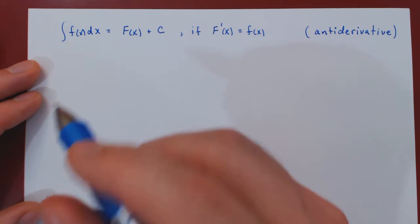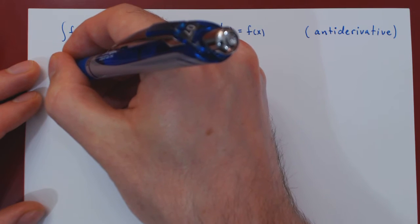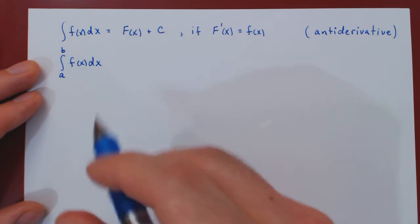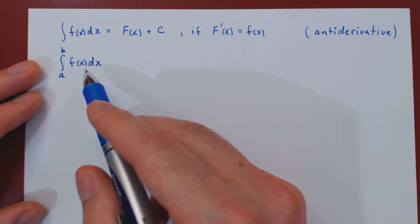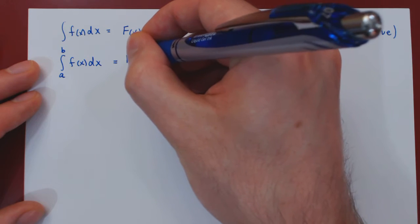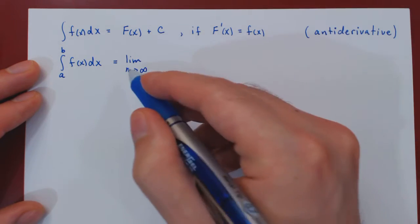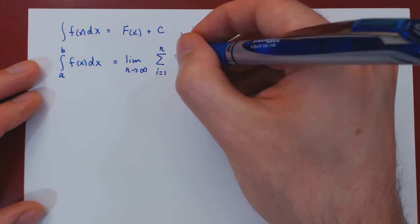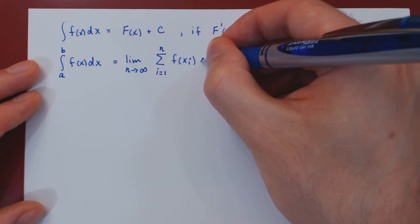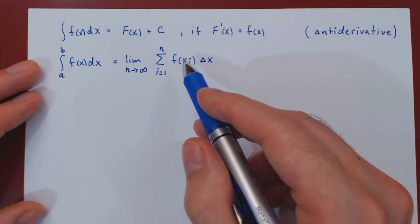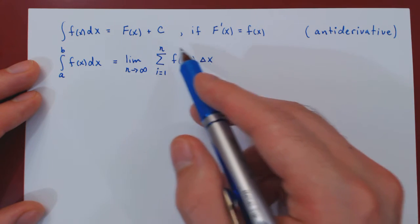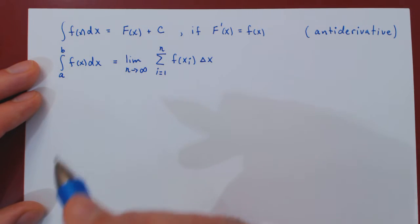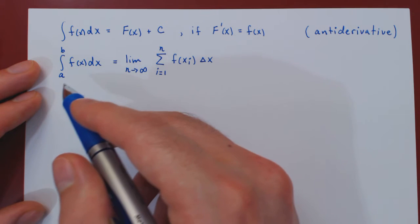The second integral is called the definite integral, and we use a very similar notation. We write the integral from a to b of f of x dx, and this is quite different from the indefinite integral. By definition, the definite integral of f of x from a to b is the limit of the corresponding Riemann sum — we let n approach infinity, summing from one to n of f of x_i times delta x. This limit yields the net area below the curve between a and b.